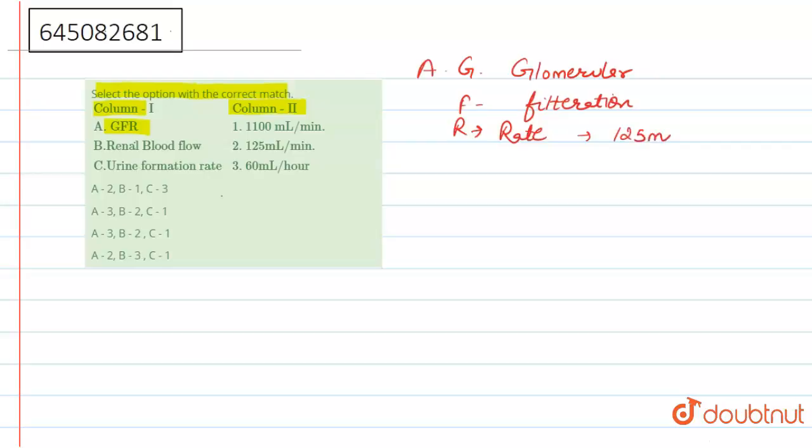Now see next one. Here next one is renal blood flow. Option B is for renal blood flow. We can see that this one refers to 1100 ml to 1200 ml. Because of this, we can say that the right is option second. So here A is for second and B is for first.